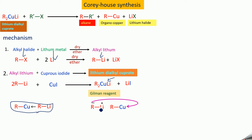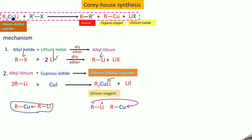This Gilman's reagent — lithium dialkyl cuprate — is what we use for preparing an alkane in Corey-House synthesis. You take R₂CuLi and treat it with a secondary alkyl halide. The starting alkyl halide for preparing the reagent can be primary, secondary, or tertiary.